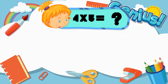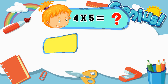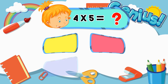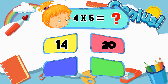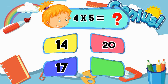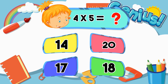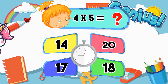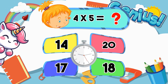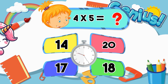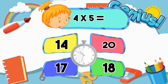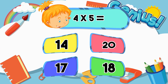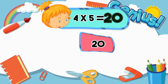What is 4 times 5? Options: 14, 20, 17, 18. Answer: 20.